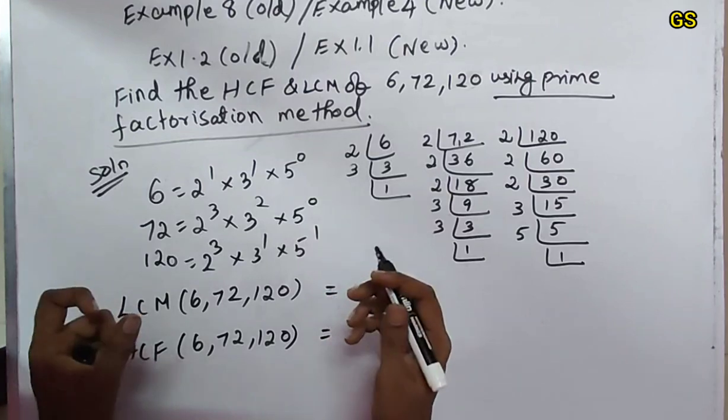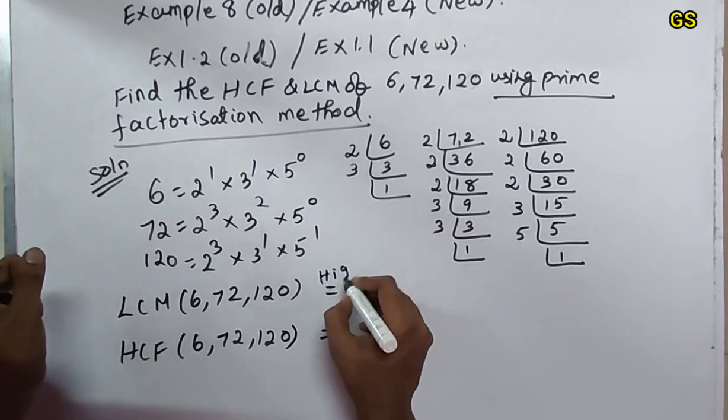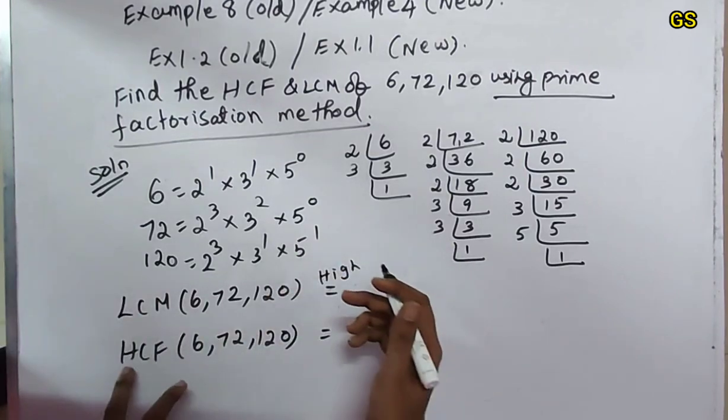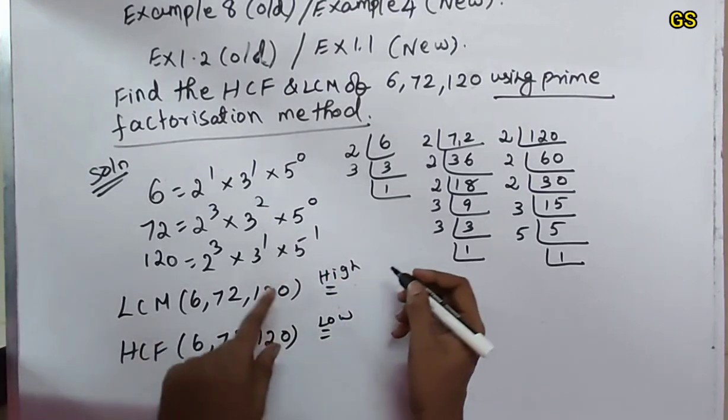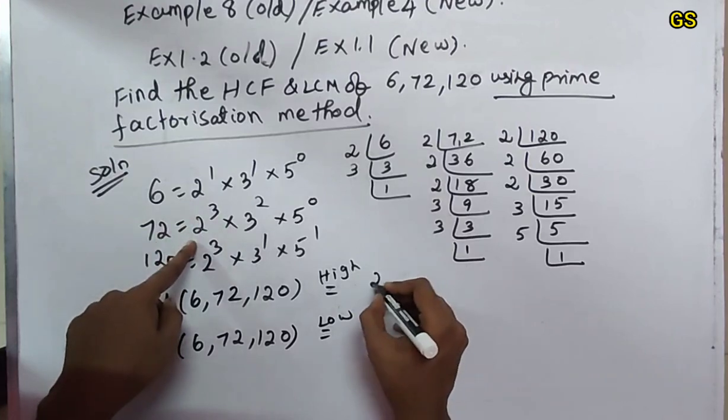LCM means least common - we take the high value. Opposite, HCF means highest common - we take the low value. That is high-low.